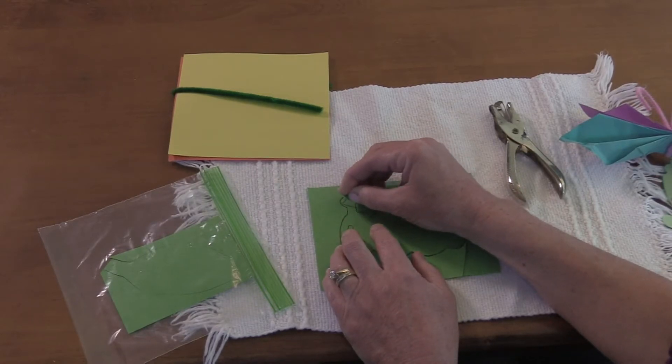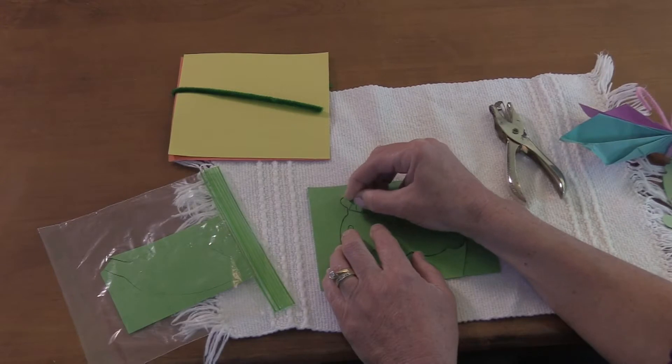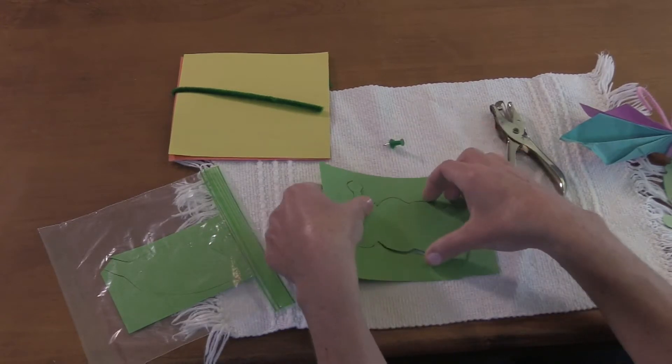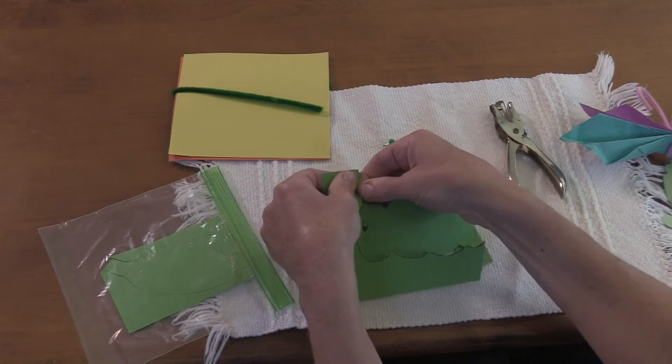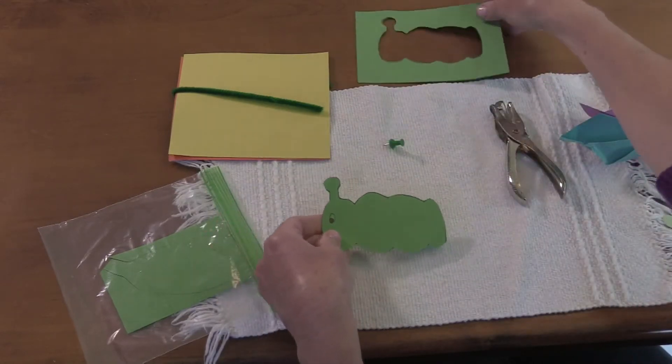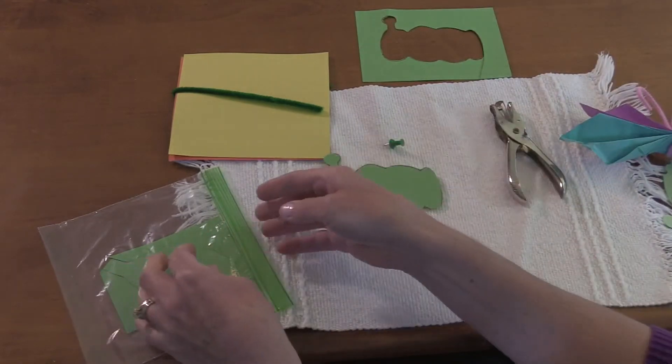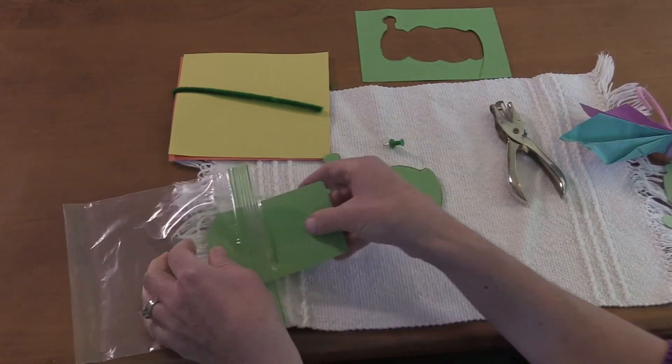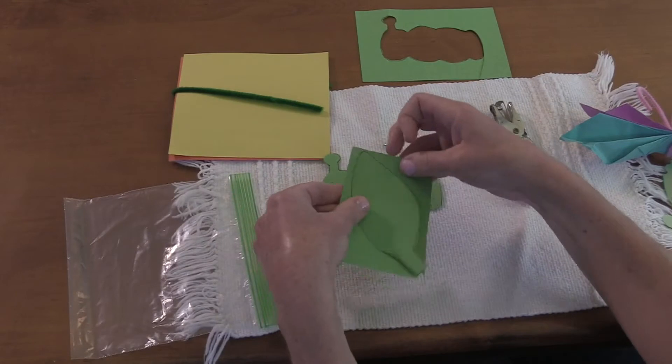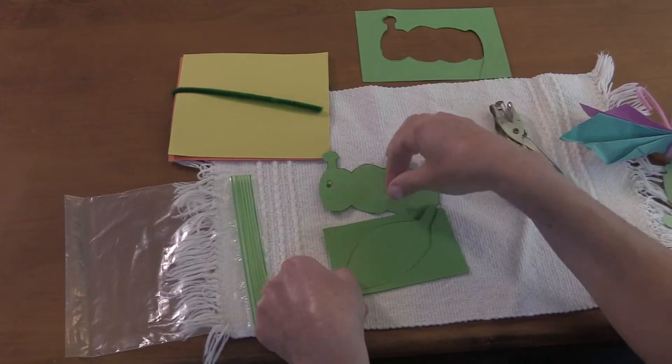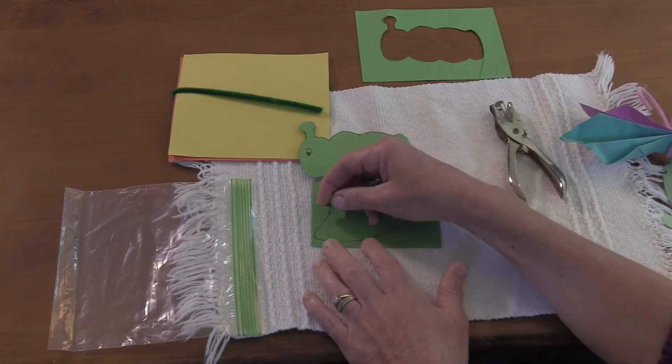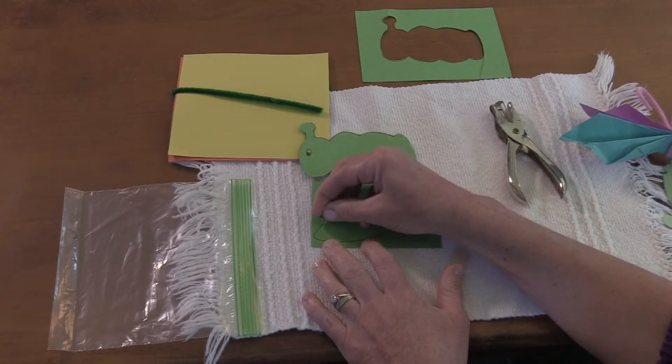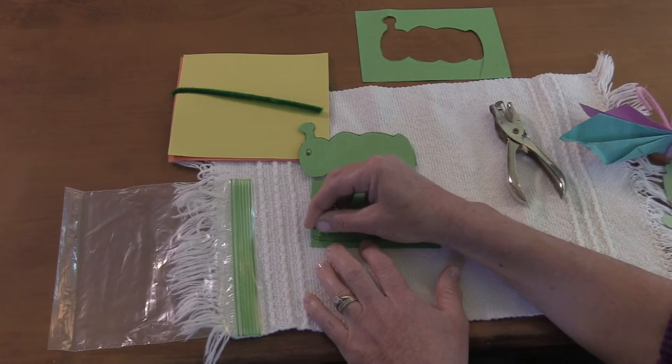Or you can use scissors and do the same thing. Now I'm going to take my caterpillar out. Now I have a caterpillar and the caterpillar is very hungry, so he's going to eat a leaf. You can either cut your leaf or you can pin poke it on the line.